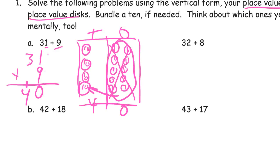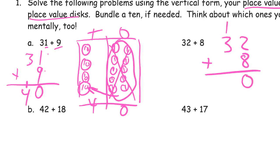Thirty-two plus eight. For parents, we're used to seeing the ten written up above, but we found that in the beginning especially, kids will ignore it when you put another ten up there. If you put it down here it's harder to ignore.